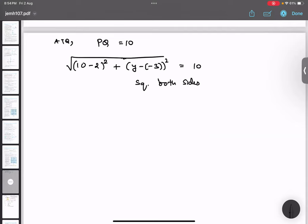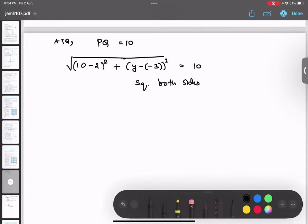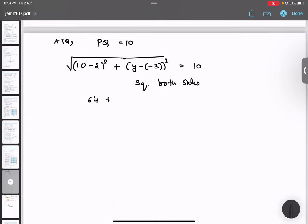So what will happen? Root will be eliminated and over here 10 minus 2 will give me 8. 10 minus 2 will be 8, that means 64. And over here I will be getting y plus minus minus plus, y plus 3 whole square. So I am going to use the identity. So a square plus b square, that is 9, plus 2ab, that means 6y equals to 100.